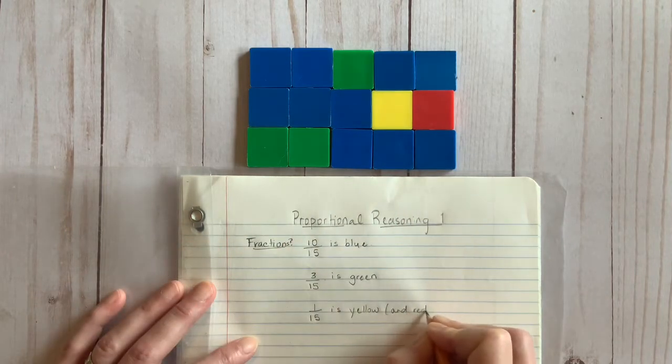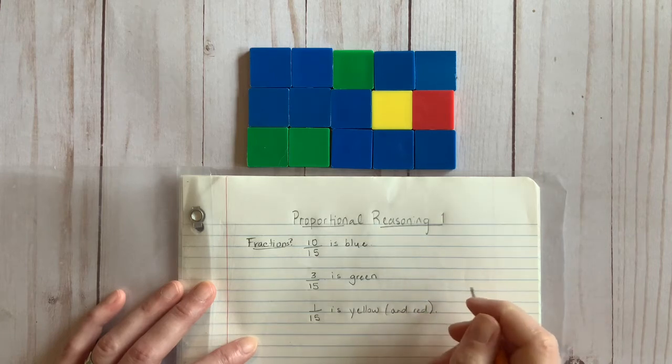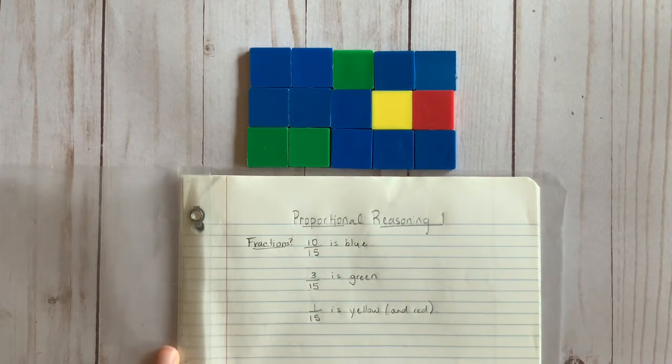Okay, let's see. We should have ended up with 10 fifteenths for blue tiles, 3 fifteenths for the green, and 1 fifteenth for each of the yellow and red tiles.